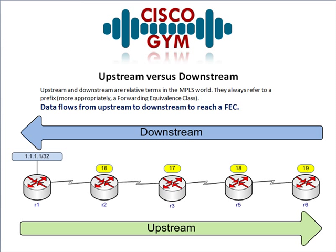Before we go, I want to hit one more topic quickly — the concept of upstream versus downstream when referring to MPLS. Upstream and downstream are relative terms in the MPLS world. They always refer to a prefix, or more appropriately a FEC — forwarding equivalence class. The key point: data flows from upstream to downstream to reach a FEC.